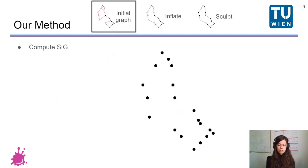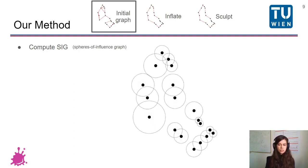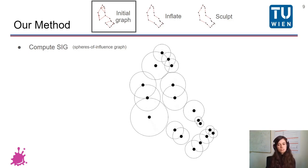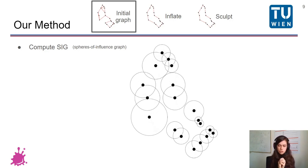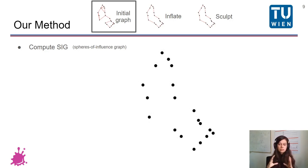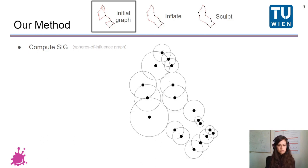And we start in the phase of the initial graph. As I've said before, we first compute the spheres of influence graph. This has been introduced by Toussaint in '88, initially as a clustering method. And two points are connected in the SIG if the distance between them is less than the sum of the respective nearest neighbors. Visually, this can be easily interpreted as centering a circle around each point and expanding it until it touches the nearest neighbor. And then connecting all of the points whose circles intersect.